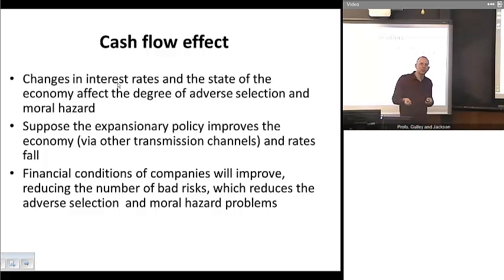Well, as the economy gets better and interest rates fall, the overall financial conditions of companies are going to improve. And so what you first start out with is that there are now fewer bad risks. So your adverse selection problem is reduced. And then plus, if the economy is doing better and firms are doing better, there's also, therefore, likely to be a lower problem with moral hazard. Firms won't have as much incentive to take unnecessary or undue risks with the money that they've borrowed.